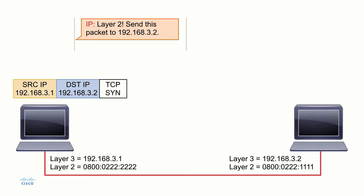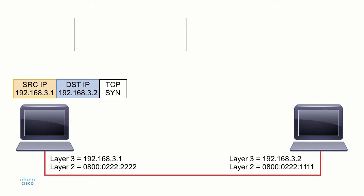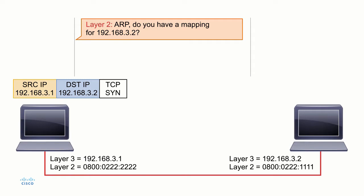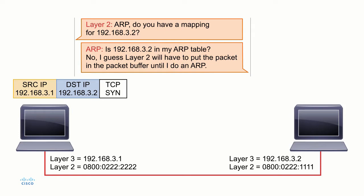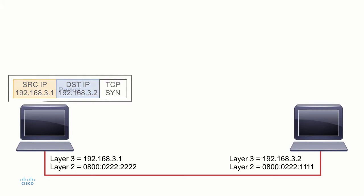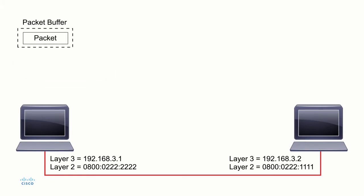Now the IP protocol tells layer two to send the packet to 192.168.3.2. Before layer two can do this, it needs to make sure it has an ARP cache entry. Layer two asks ARP: do you have a mapping for 192.168.3.2? ARP checks and finds that it is not in the ARP table. So ARP says layer two is going to have to put the packet in the buffer — kind of in a parking lot — while ARP does its work. That packet we want to send is now sitting in the packet buffer.